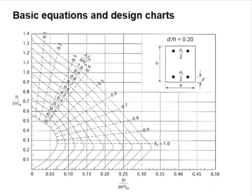This line represents As fy / bh fck. To use this chart, you need to obtain N / bh fck and M / bh squared fck. Then you find the intersection between the two values that you obtain.